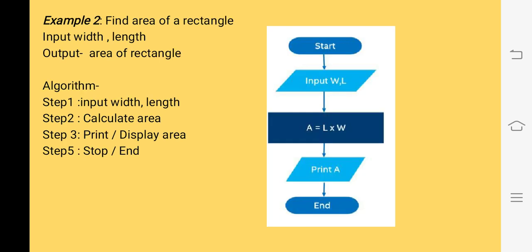In the second example, we have to find the area of a rectangle with the input width and length. We will use a start box to indicate that we are starting a flowchart. Then we will draw a flowline and use an input statement to input width and length — Input W and L. After getting input, we will use a processing box to show the calculation: A equals L multiplied by W. After getting the result, we will use the input-output box to print the result — Print A. Finally, we will use END to indicate that we are completing the flowchart.